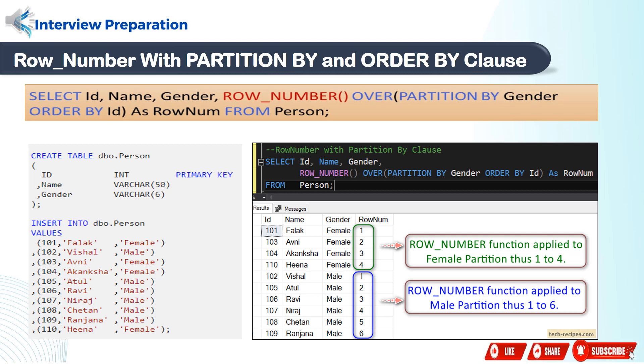Similarly, second partition window is created for male having 6 rows. ROW_NUMBER function applied to each row in male partition, which is assigning a number from 1 to 6. In summary, ROW_NUMBER function resets the number for each partition and starts at 1 when crossing the partition boundary.